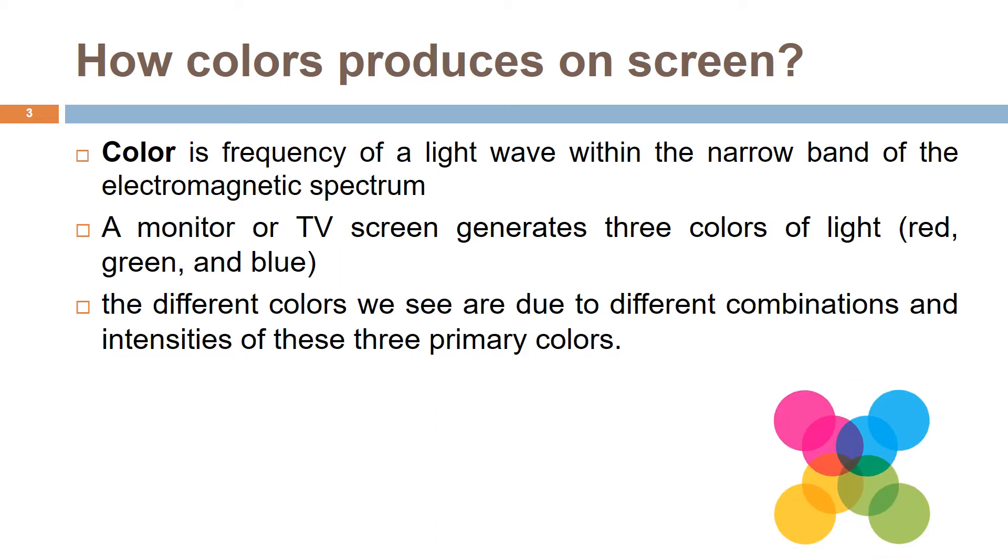A monitor or TV screen generates three colors of light: red, green, and blue. The different colors we see are due to different combinations and intensities of these three primary colors.